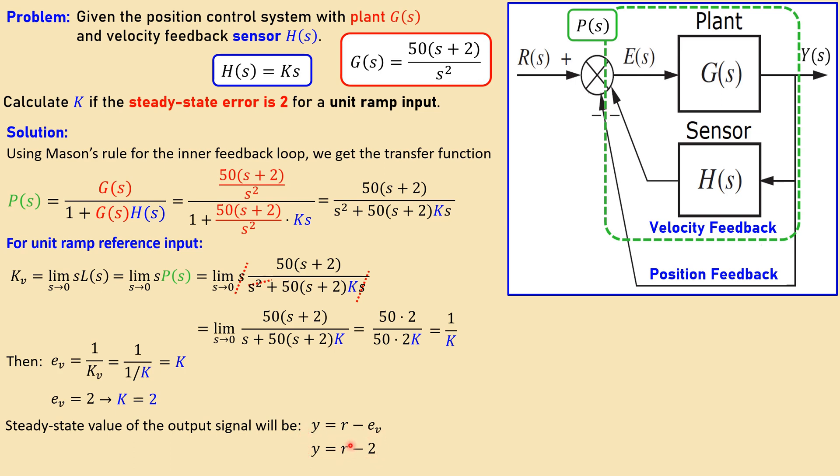So if my R, for example, has a value at some specific time, let's say 20, then it will be 20 minus 2 will be then 18 for my value of Y, which is an output signal. We will see it shortly in the simulation results.